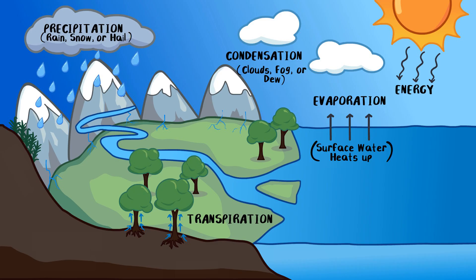When precipitation reaches the ground, it can either run off the surface into rivers and lakes. We call this surface runoff. Or it can soak into the soil, and we call that infiltration.